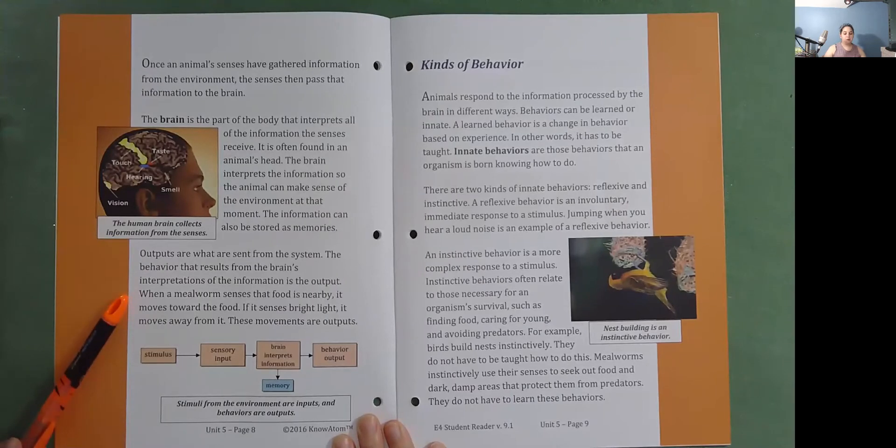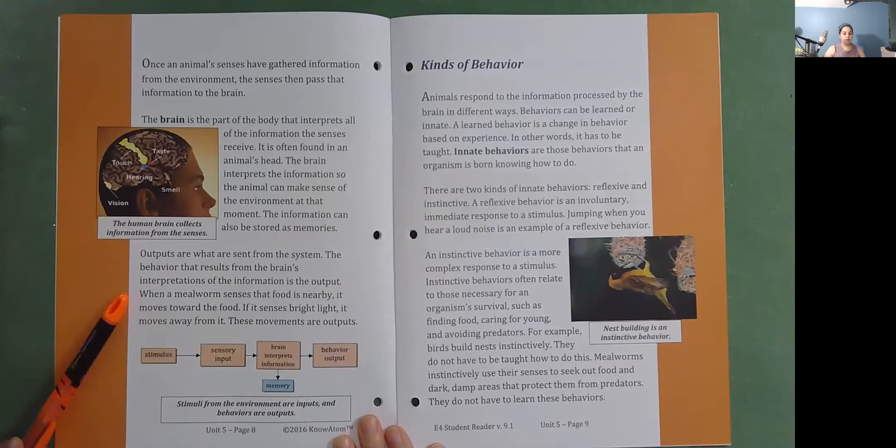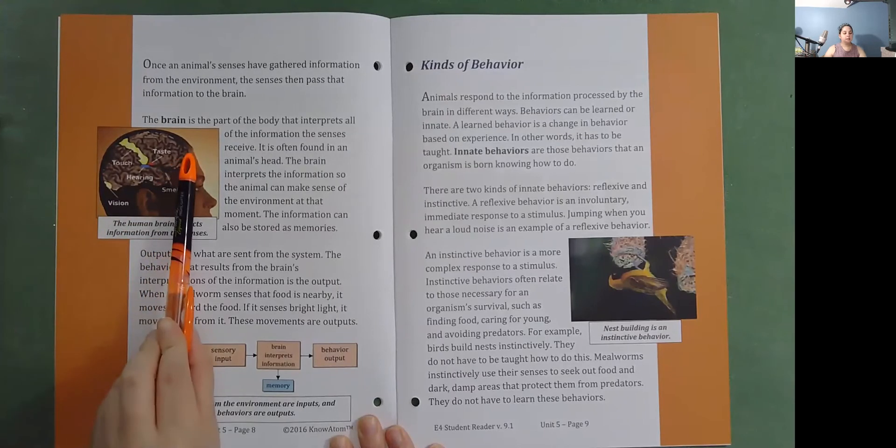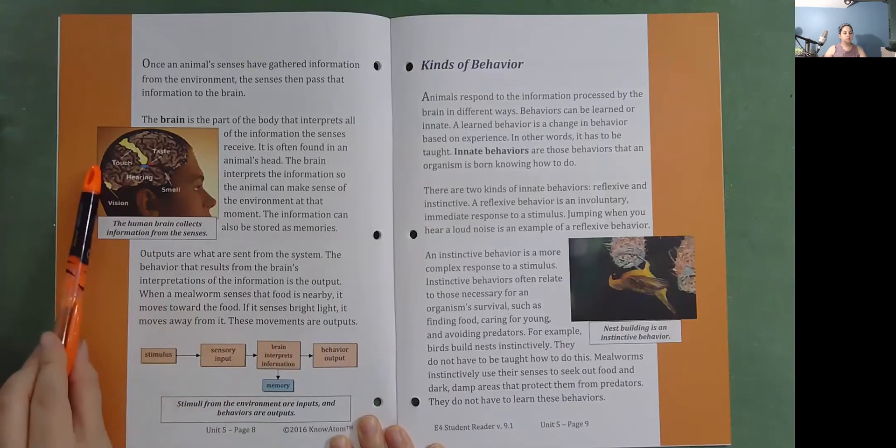The behavior that results from the brain's interpretations of the information is the output. When a mealworm senses that food is nearby, it moves toward the food. If it senses bright light, it moves away from it. These movements are outputs. The human brain collects information from all the senses: vision, smell, taste, hearing, and touch.